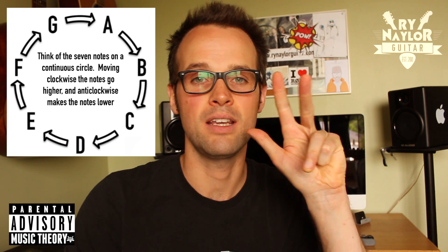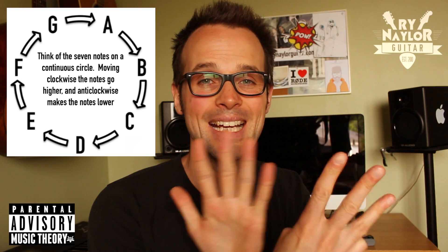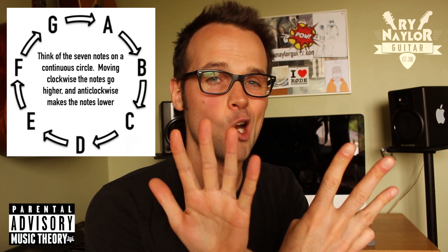So if you think of starting from A, we go A, B, C, D, E, F, G, A. When I'm back at A, that is an octave. Eight. Octopus! Think eight letters, eight limbs as an octave.